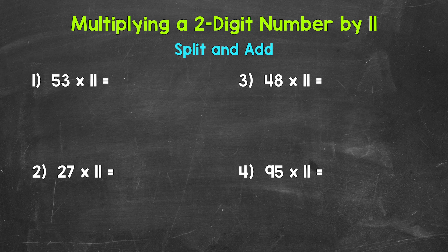Let's jump into number one where we have 53 times 11. So split and add. We split the digits of 53 or whatever is being multiplied by 11. Then we add the digits. So 5 plus 3 is 8. That goes in between the split digits. And that's our answer. 53 times 11 equals 583.